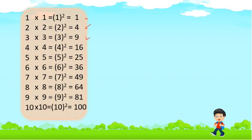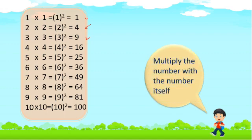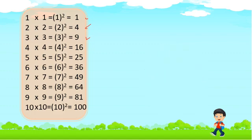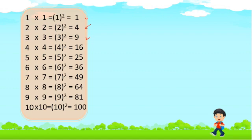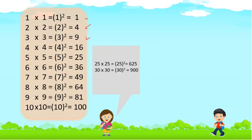If you are asked to find the square of a number, you multiply the number with the number itself. So let's take a question: find the square of 25 and 30. To find the square of a number, we multiply the number with the number itself. When we multiply 25 by 25, that is 25², we get 625. Similarly, when we multiply 30 by 30, that is 30², we get 900.